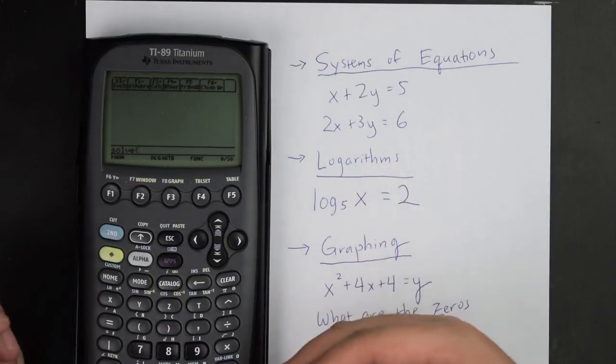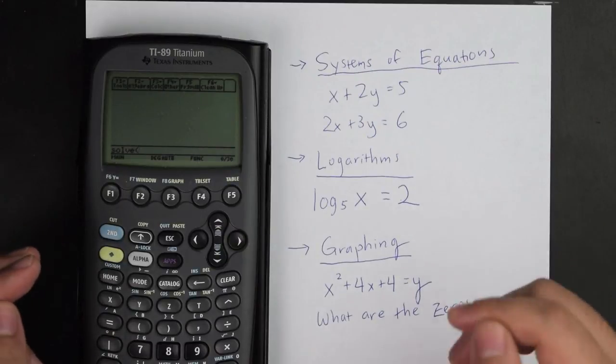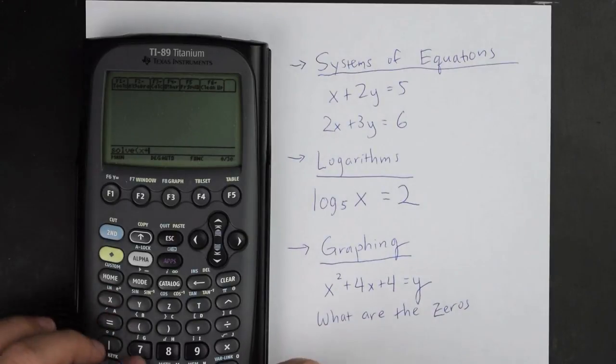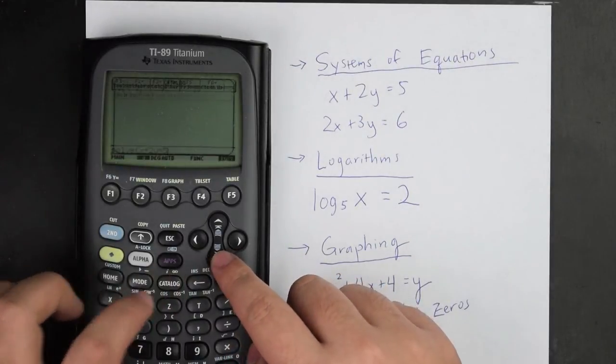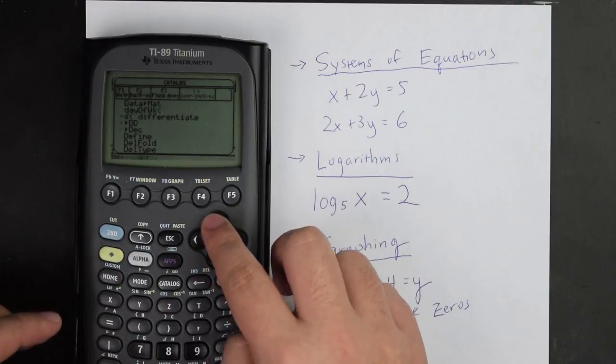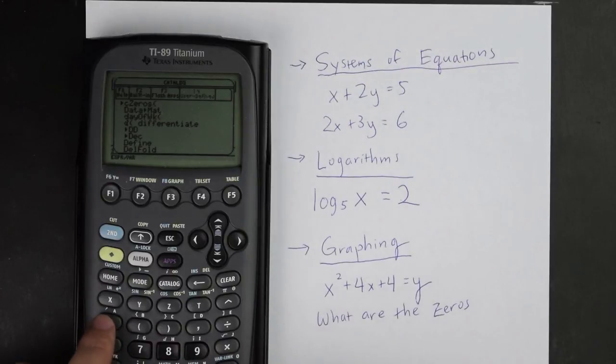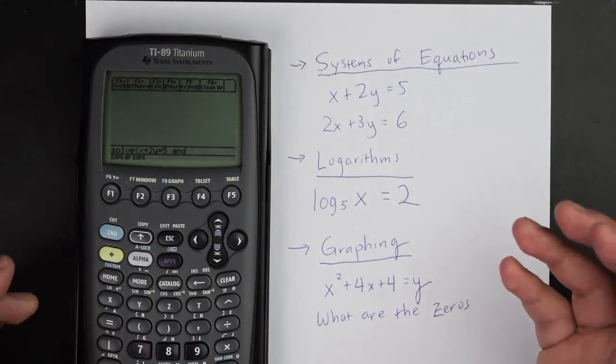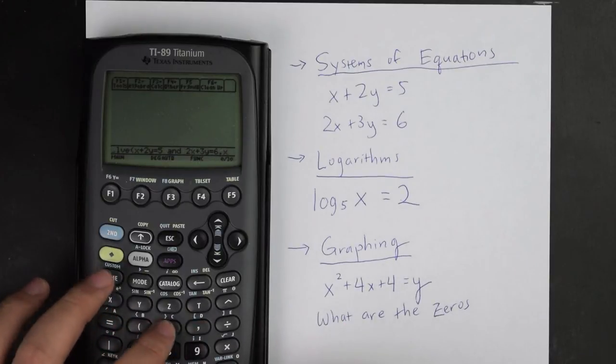And what the solve function does, it lets me solve for a specific variable. It doesn't work 100% of the times, but it works pretty well. And so for example, I could put x plus 2y equals 5, and what I'm going to do is I'm going to go to the catalog. And one of the great things about it is right now, my data set is in the letter D. And let's say I want to include another equation. I could actually push the letter A right here. You see right here in the white letters A, and actually insert AND into here. And then afterwards, I could put 2x plus 3y equals 6, and comma x.